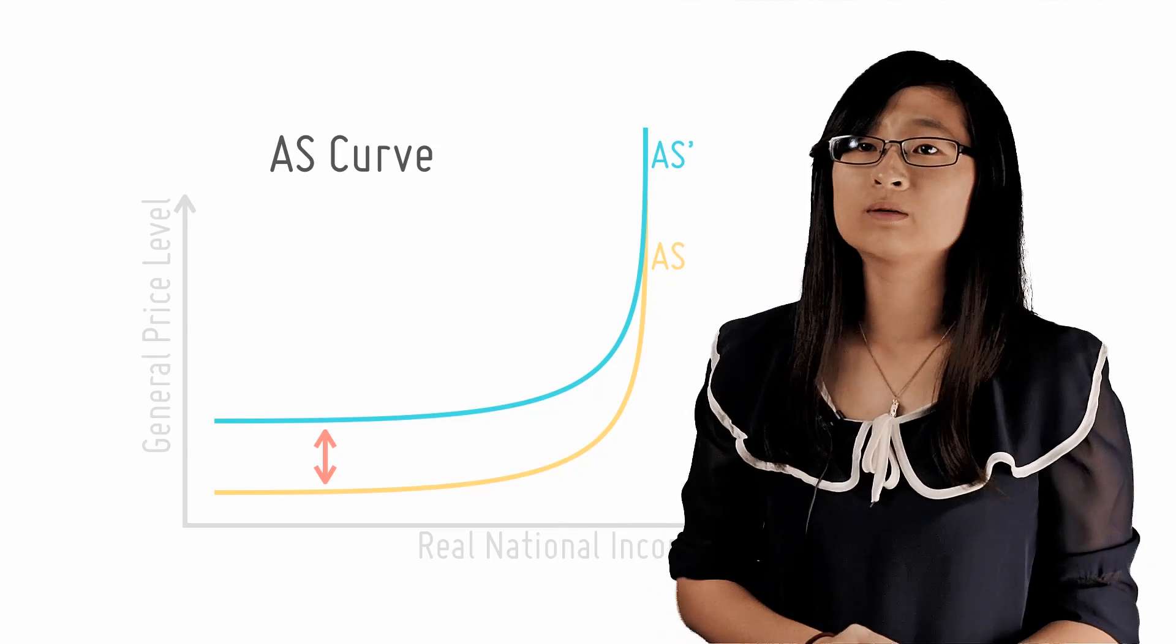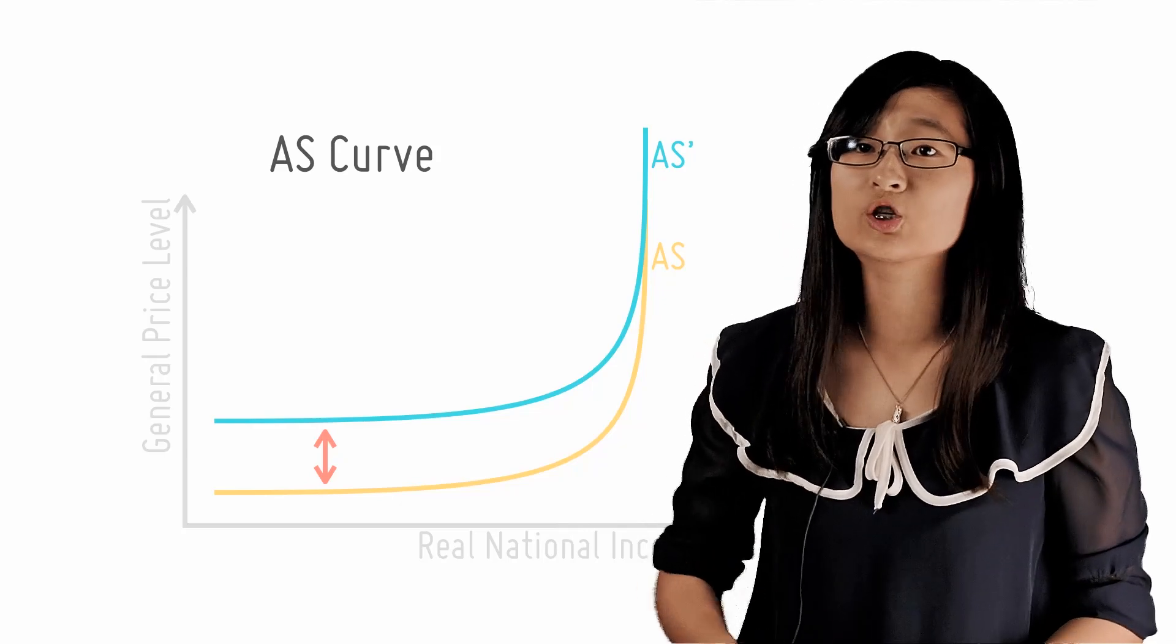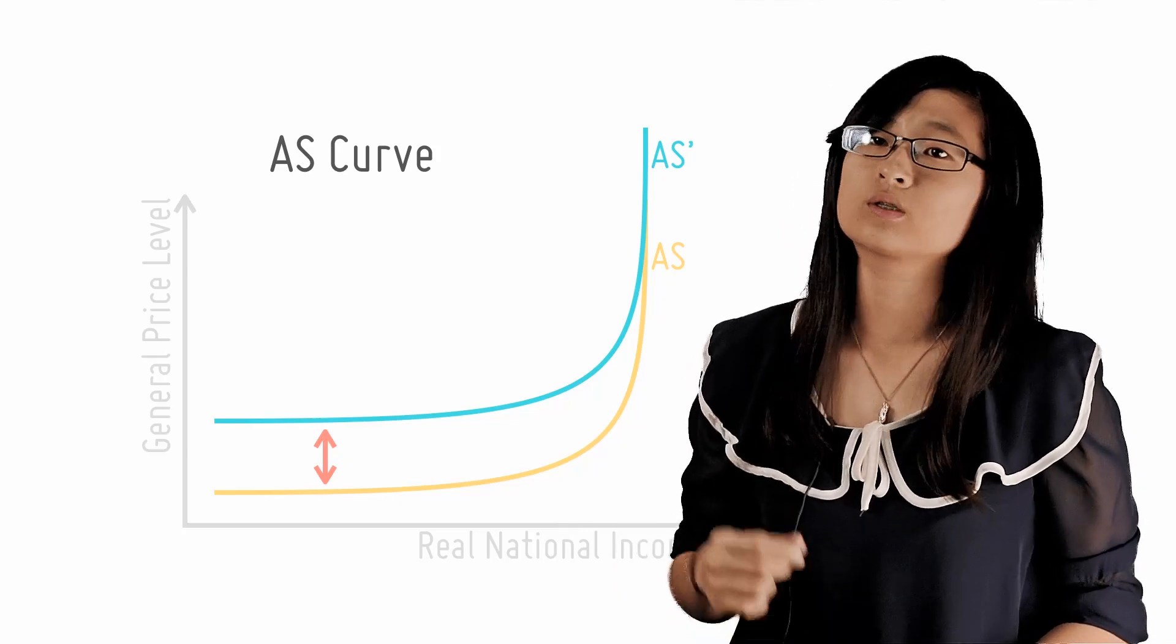Essentially, in order to determine whether the AS curve will shift upwards or downwards, you just need to figure out whether the firm's cost of production increases or decreases respectively.